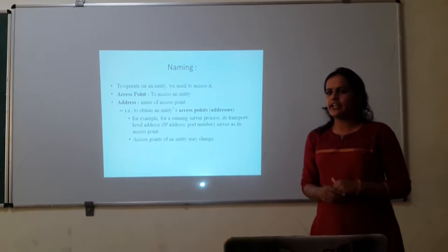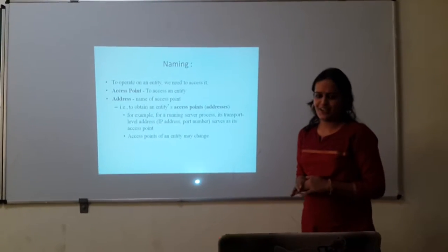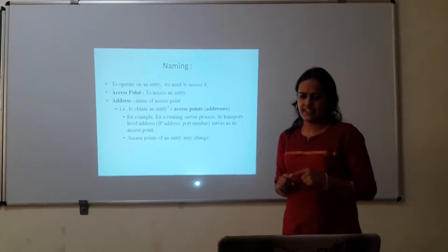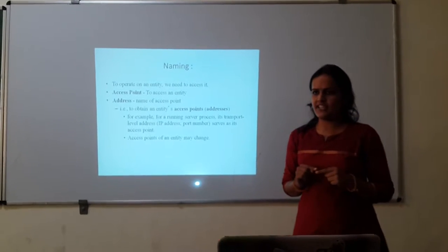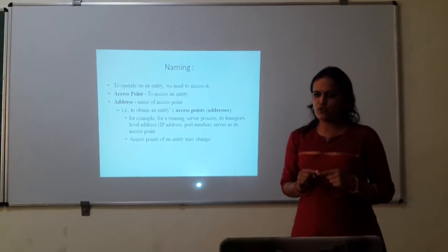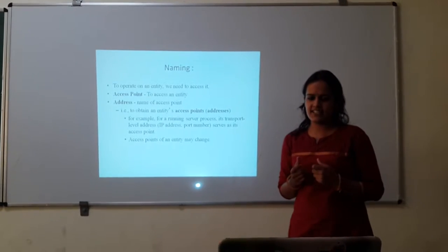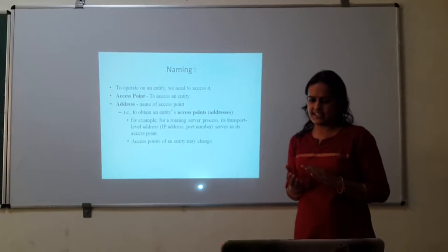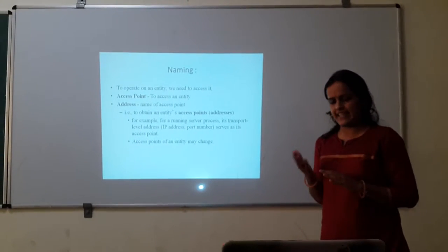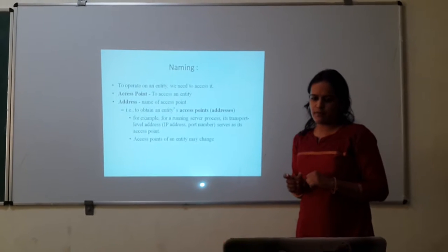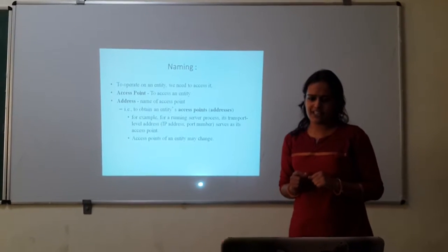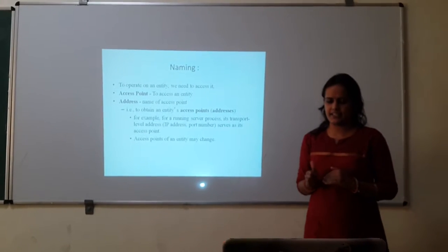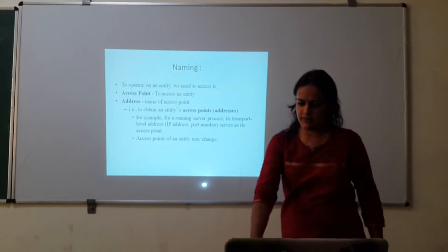Now to operate on an entity, we need to access it. For accessing any entity, its access point and address is needed. What is access point? An access point is any point which is used to access an entity. And then address. Address is basically the name of that access point. For example, for a running server process, its transport level address, that is its IP address and port number, serves as its access point. Access points of an entity can be changed.